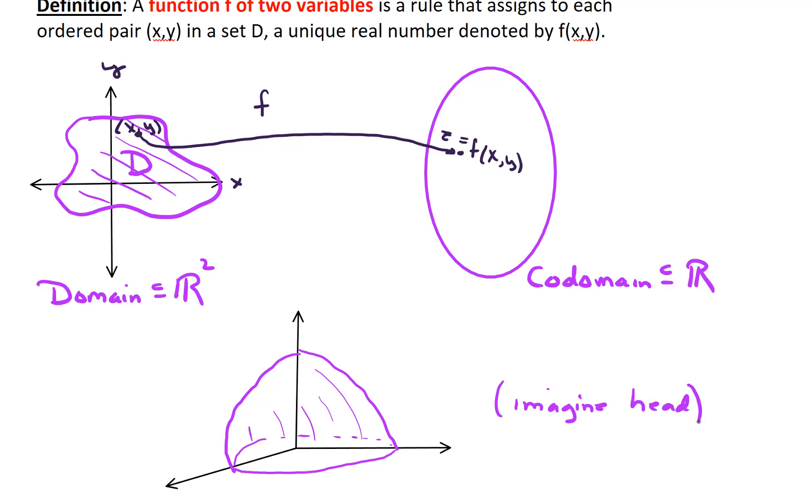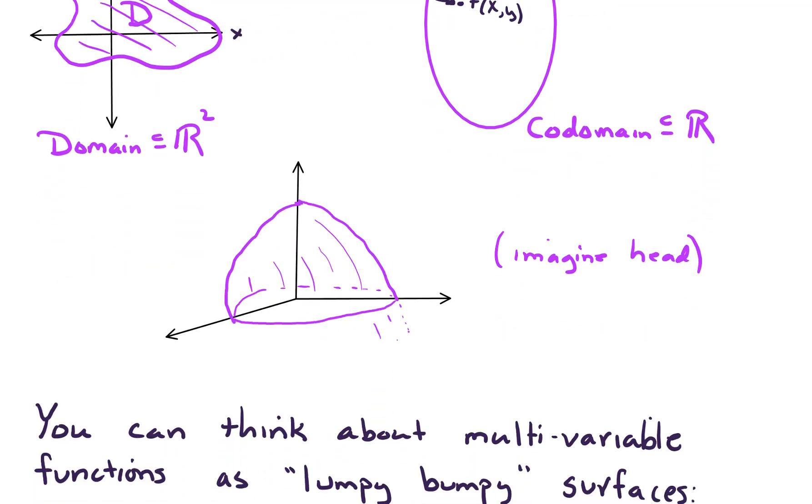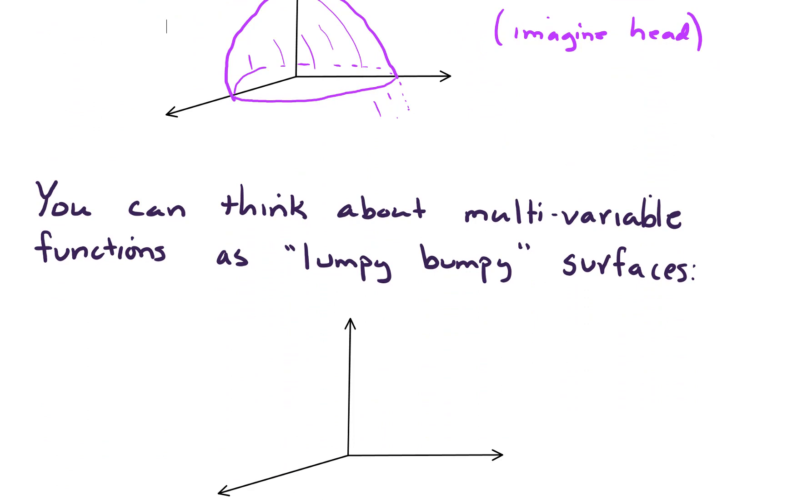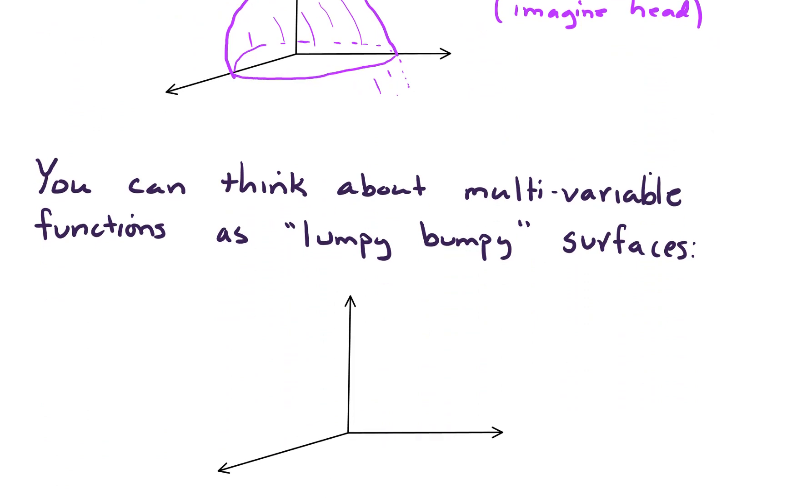So this function is a function of two variables. So you can think about multivariable functions as quote-unquote lumpy-bumpy surfaces. So just generally speaking, you've got some lumpy-bumpy surface up here. Who knows what it does? We'll graph them, of course.